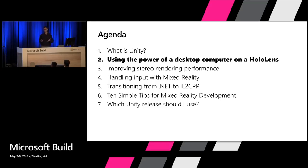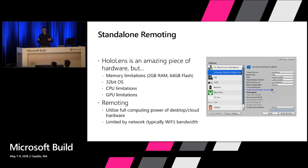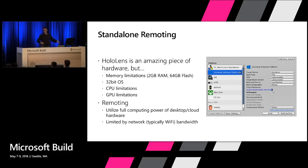The HoloLens is a pretty powerful computer, but sometimes you want more for your stand-alone applications. The CPU is a 1 GHz Atom x5 processor and you've got 2 GB of RAM. If you've done HoloLens development, you know you have to really trim down what your application can do to perform well. Achieving high frame rate is really important for any immersive environment.